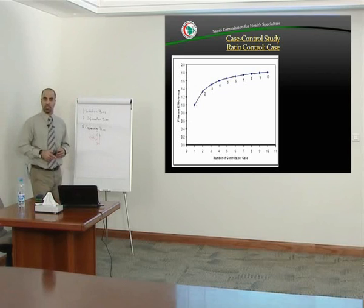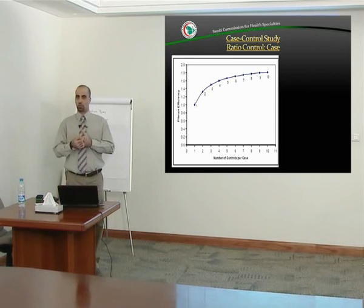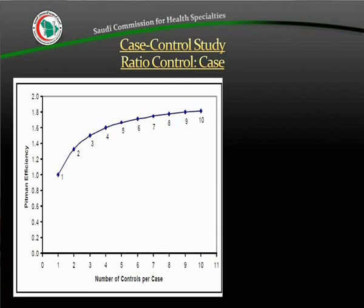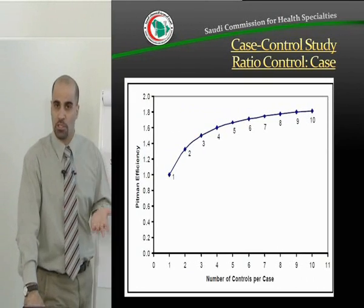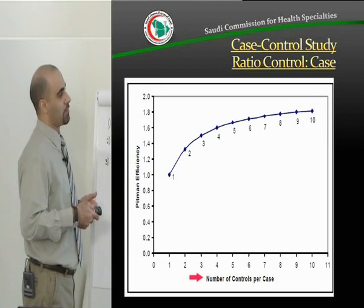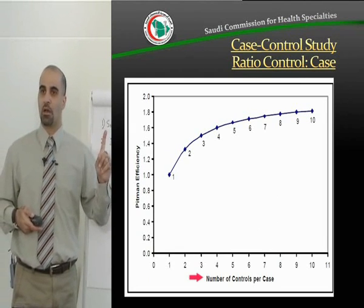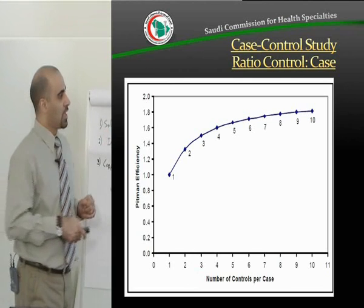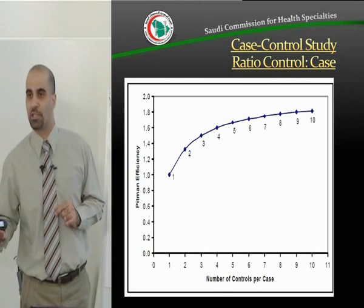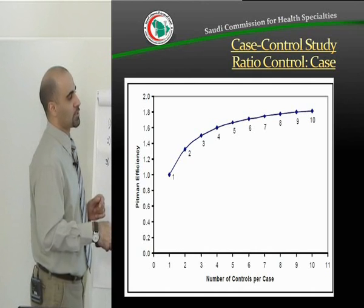Case-control studies usually do not use a one-to-one ratio. You can take more controls compared to cases. You can take 100 cases and 200 controls, or even more. The number of controls per case matters: one control per case means 100 cases and 100 controls, two controls per case means 200 cases would require 400 controls, and so on — three controls per case, four controls per case, and so forth.